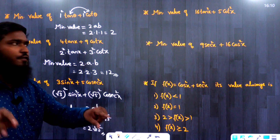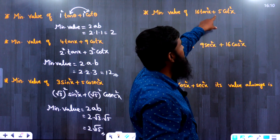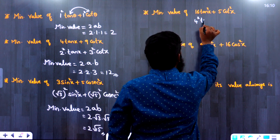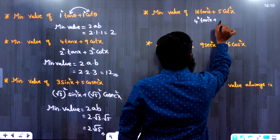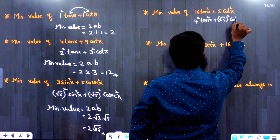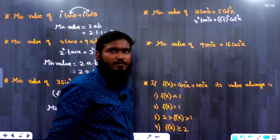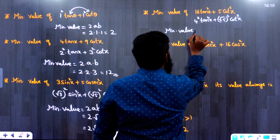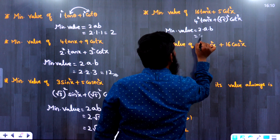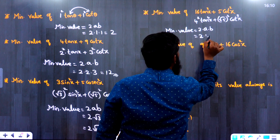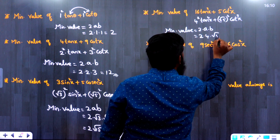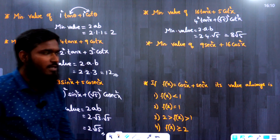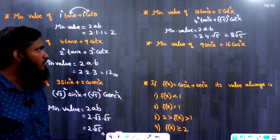Next: minimum value of 16 tan²x + 5 cot²x. Write 16 = 4², so a = 4; 5 = (√5)², so b = √5. Minimum value = 2ab = 2 × 4 × √5 = 8√5.